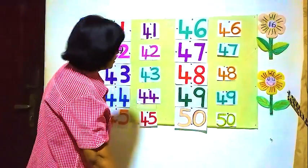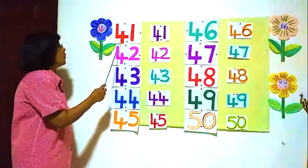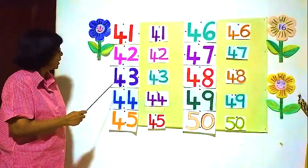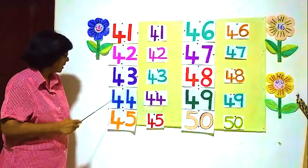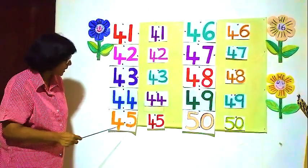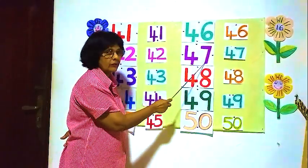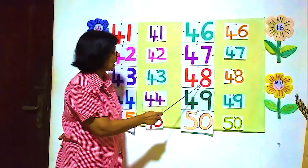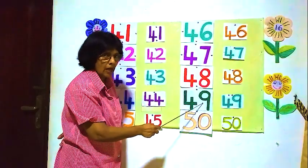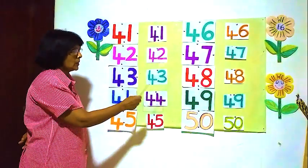Right, now we will read all the numbers from the beginning. Numbers 41 to 50. We will read: 4-1, 41. 4-2, 42. 4-3, 43. 4-4, 44. 4-5, 45. 4-6, 46. 4-7, 47. 4-8, 48. 4-9, 49. 5-0, 50. Numbers 41 to 50 are here.